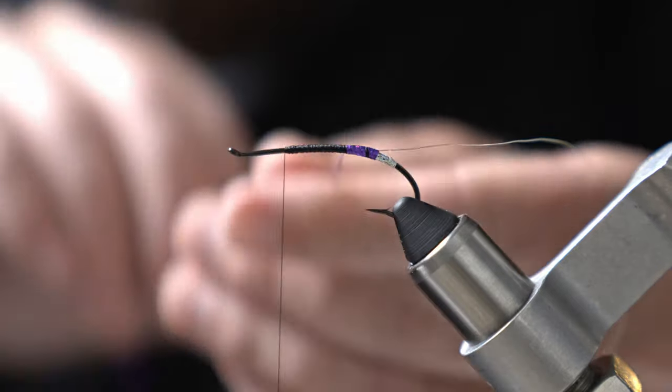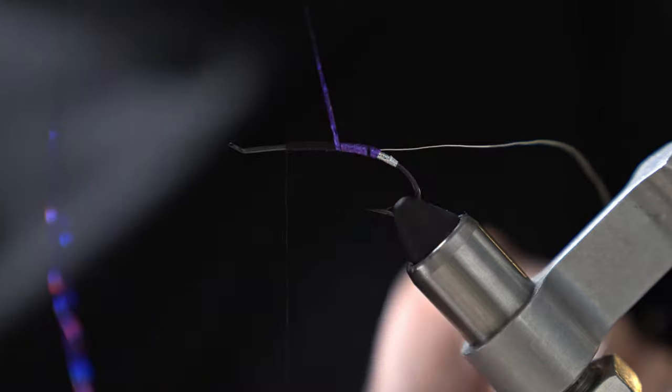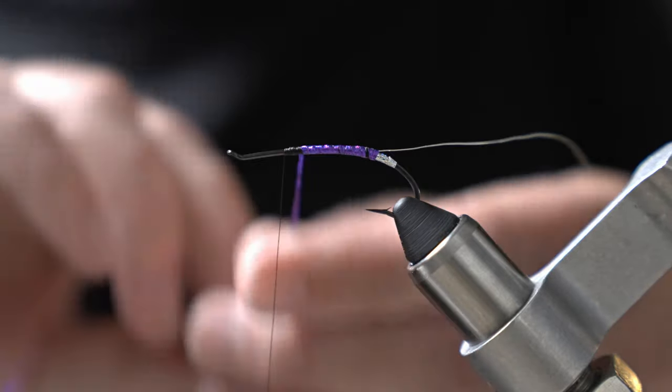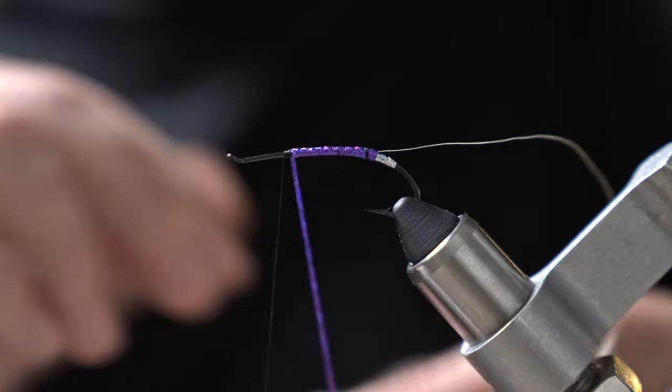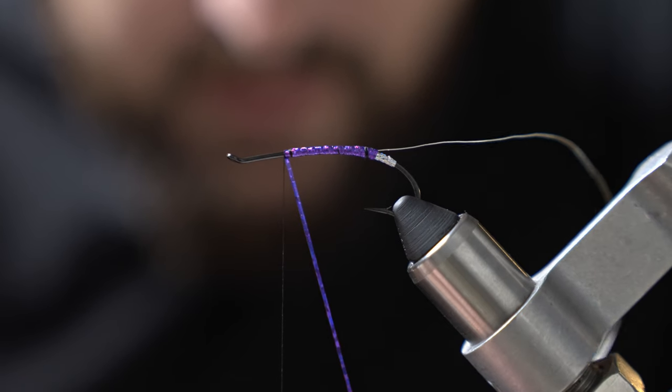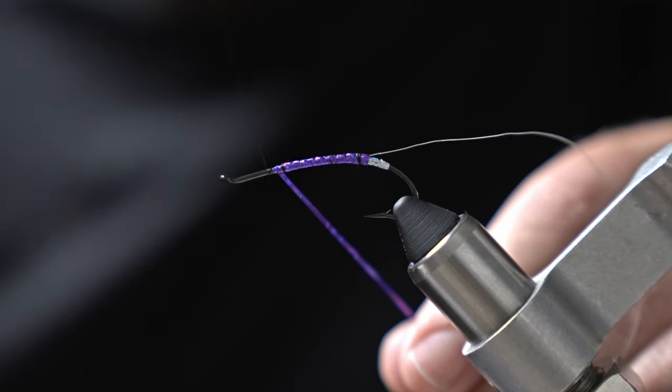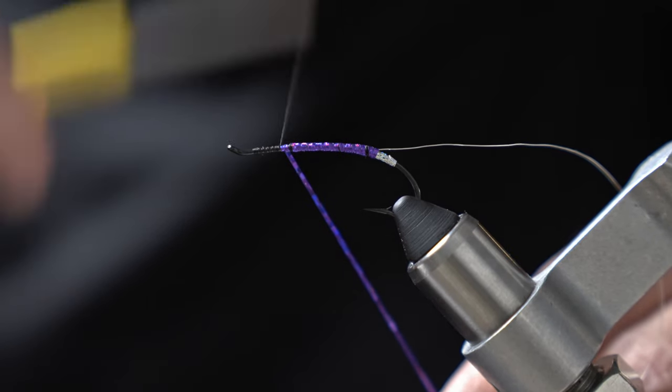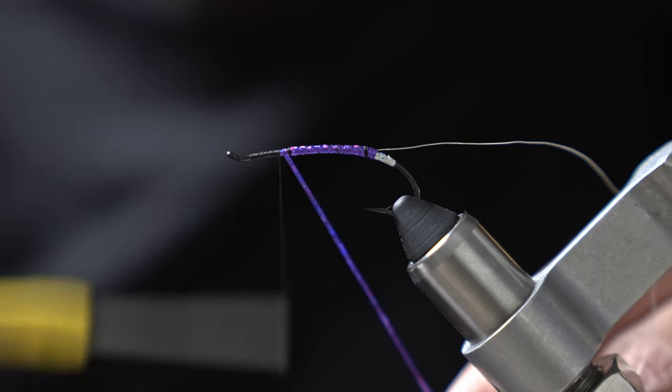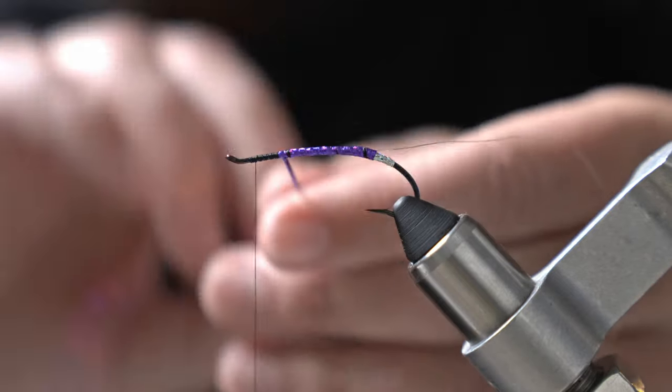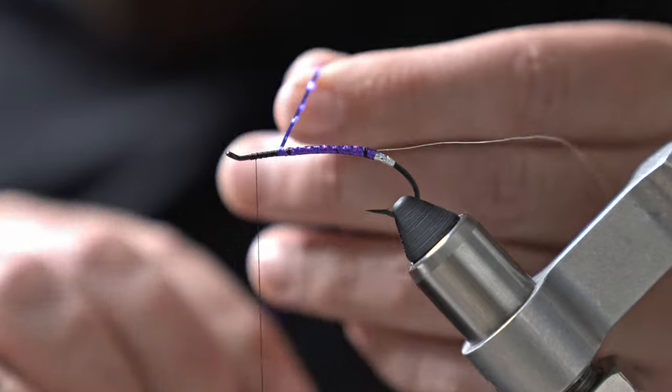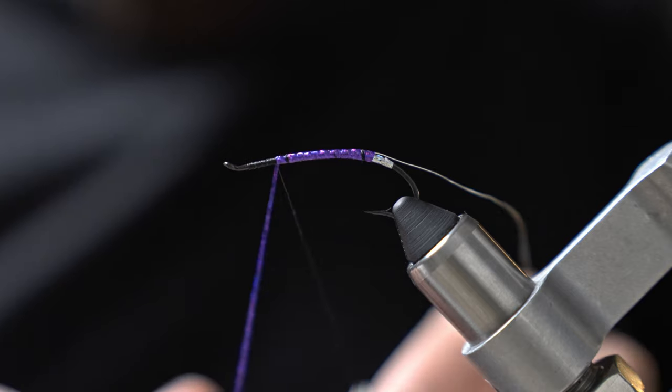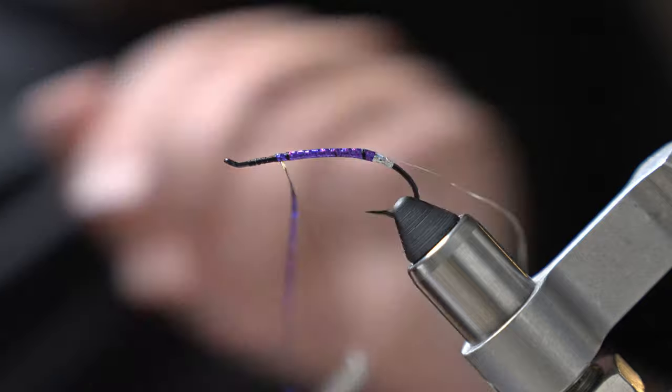I want to make sure we don't leave any of the black thread exposed. Get ourselves a little bit longer base to work with. And with these Alec Jackson style hooks you've got that point where the hook shank kind of has been bent over itself so you've got kind of a little junction there and that's about where we want to wrap this tinsel up to.